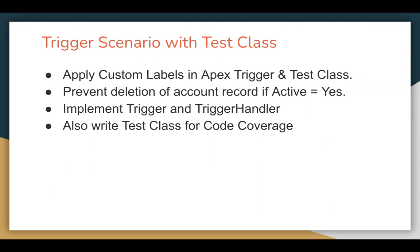In my previous demonstration, I showed you how we can prevent deletion of an account record if the active field is equals to yes. I will be taking help of that example and will show you how we can apply custom labels in Apex Trigger and Test Class.